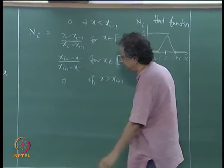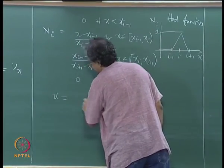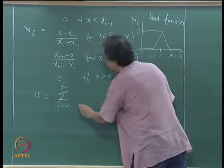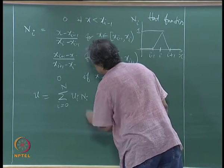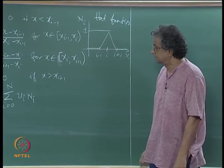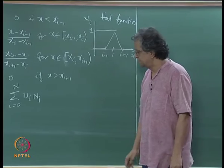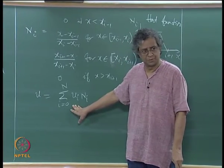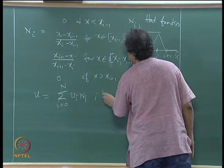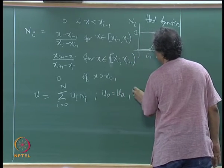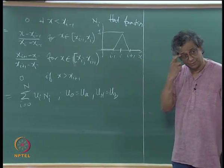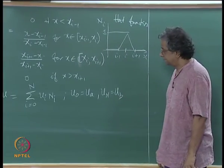The function u can be represented as a sum: u = Σ u_i · N_i. Clearly u_0 will be u_a and u_N will be u_b from the boundary conditions — those are given and are known.